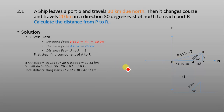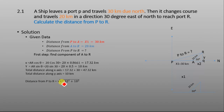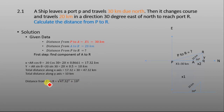To find the distance from P to R, we apply the Pythagorean theorem: the square root of 47.32 squared plus 10 squared, which equals 48.365 kilometers.